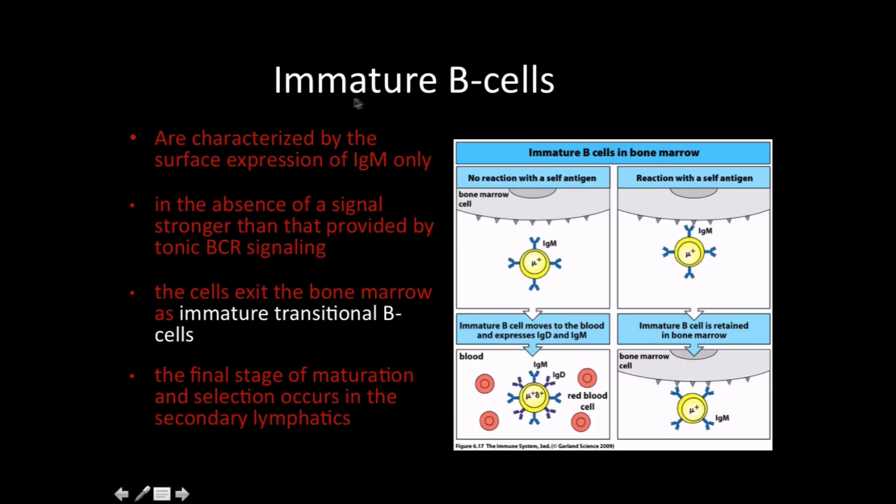For immature B-cells, these guys are characterized by the expression of surface IgM only, because mu is the first one that we start to make. In the absence of a signal stronger than that provided by tonic BCR signaling, the cells will exit the bone marrow as immature transitional B-cells. They're transitioning from the primary lymphoid organs to the secondary lymphoid organs, and the final stage of maturation and selection occurs in the secondary lymphatics.